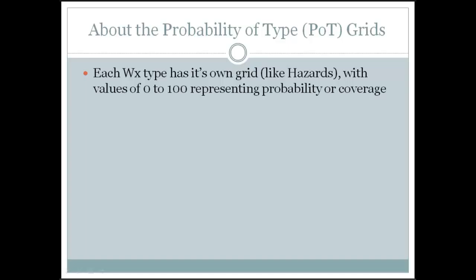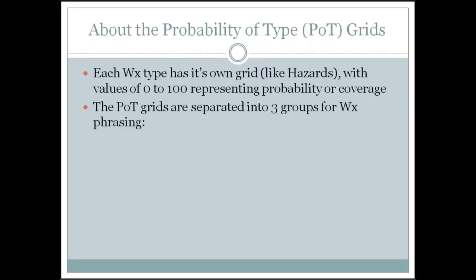Some people make the argument that having more grids equates to more work — but in essence this actually simplifies the update process. These grids being numbers are a lot easier to manipulate than that ugly string weather grid. The grids are separated into three groups. You don't need a grid for every weather type — just for those weather types that are actually occurring, whether it be fog, rain, or thunder. The first group is the precipitating types: rain, rain showers, and others, which follow a conditional probability formula.